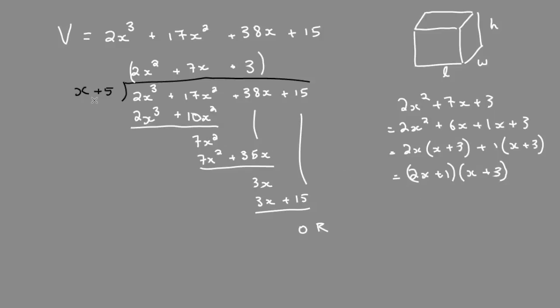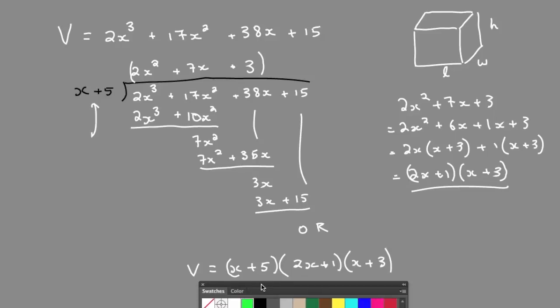Now we take our original binomial and multiply that by the factored form to give us our volume. And since you know volume equals length times width or height, some combination, we have our expressions for the three dimensions.